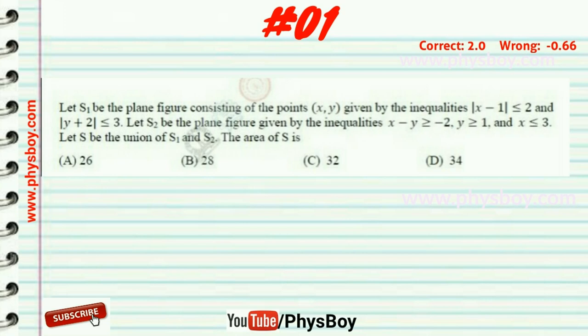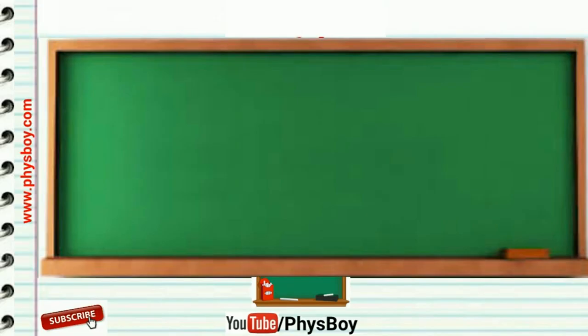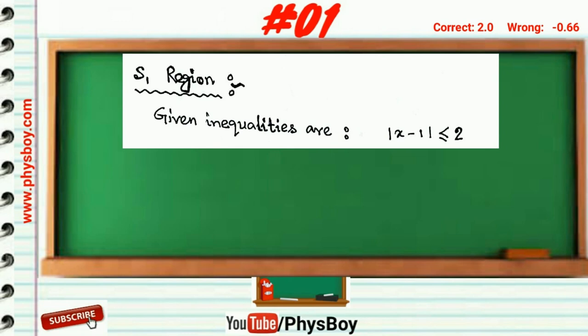Question number one: Let S1 be the plane figure consisting of points (x, y) given by the inequalities |x - 1| ≤ 2 and |y + 2| ≤ 3. Let S2 be the plane figure given by the inequalities x - 1 ≥ -2, y ≥ 1, and x ≤ 3. Let S be the union of S1 and S2. Then what is the area of S? I request you to pause the video and try to solve the question, then play and watch the solution.